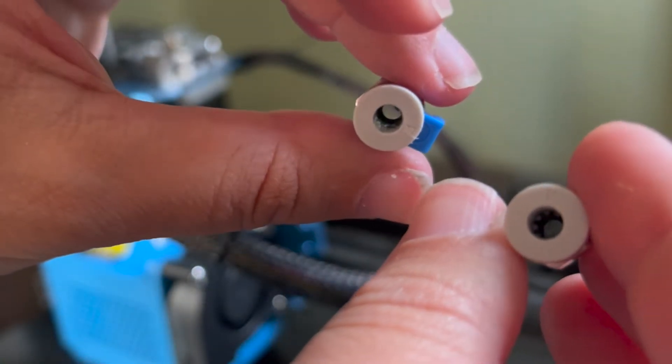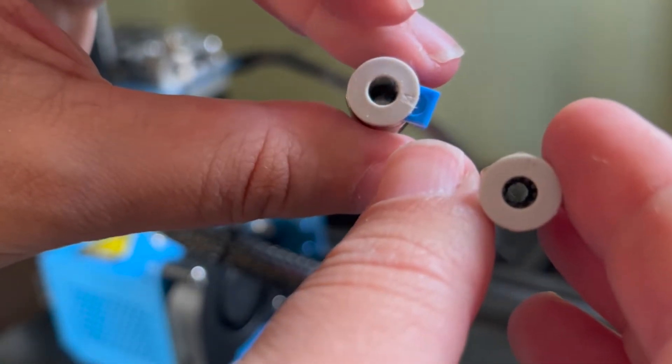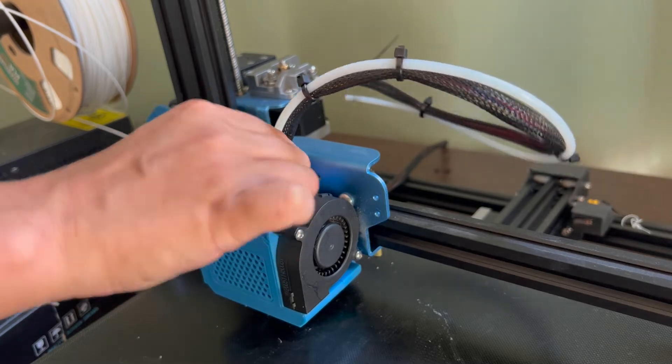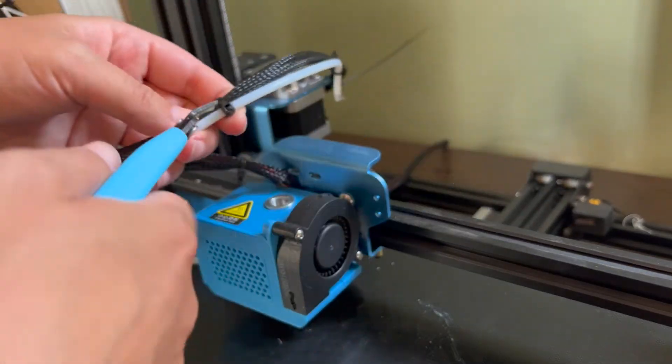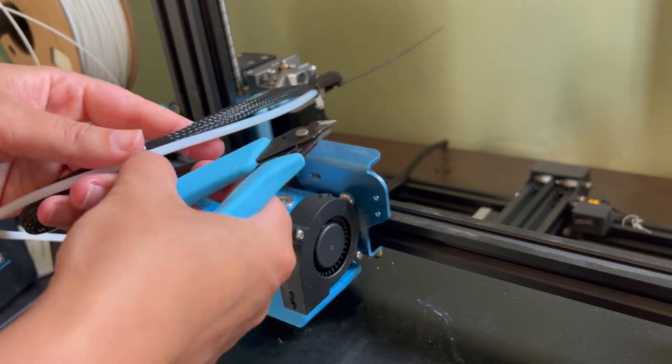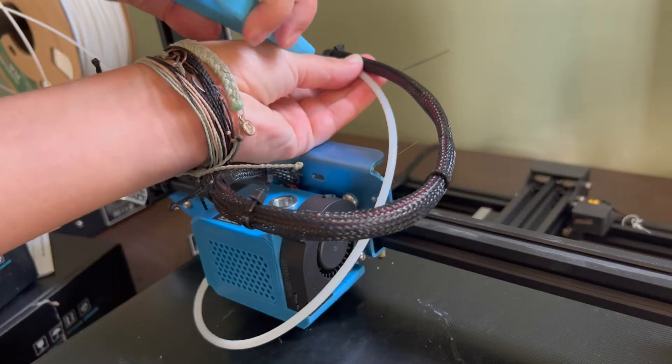Here's the old clamp compared to the new one. You now want to clip the zip ties that hold the Bowden tube to your wires. If you have something other than a CR10, this may look a little bit different. Then pull the tube off and remove the zip ties that you just cut.